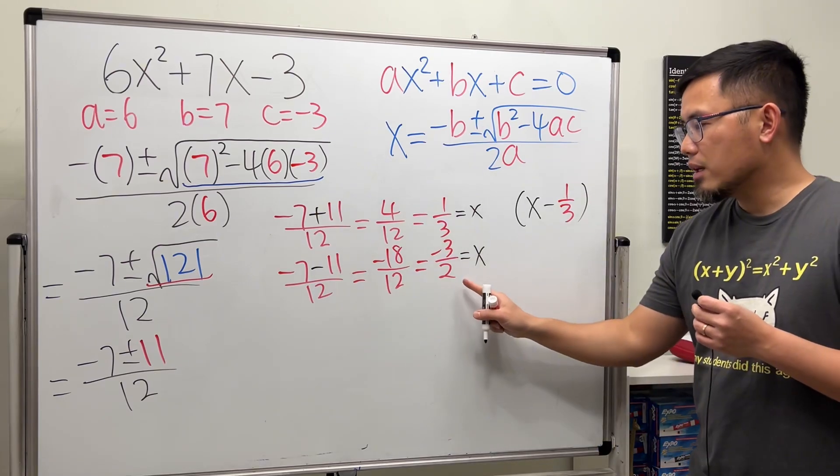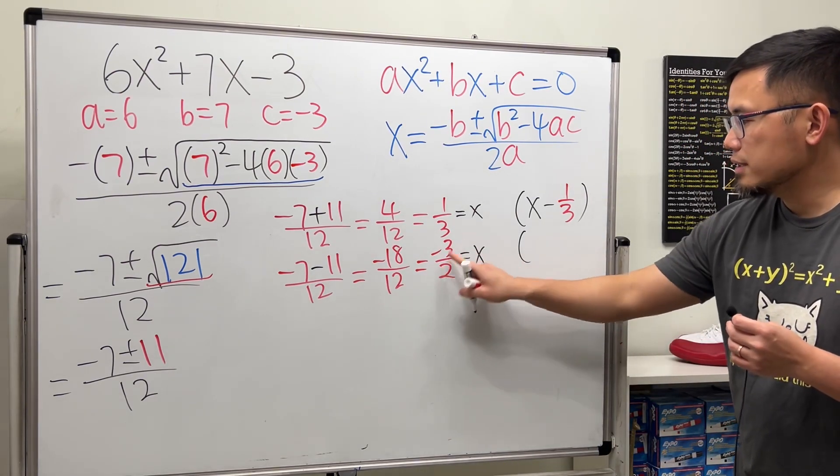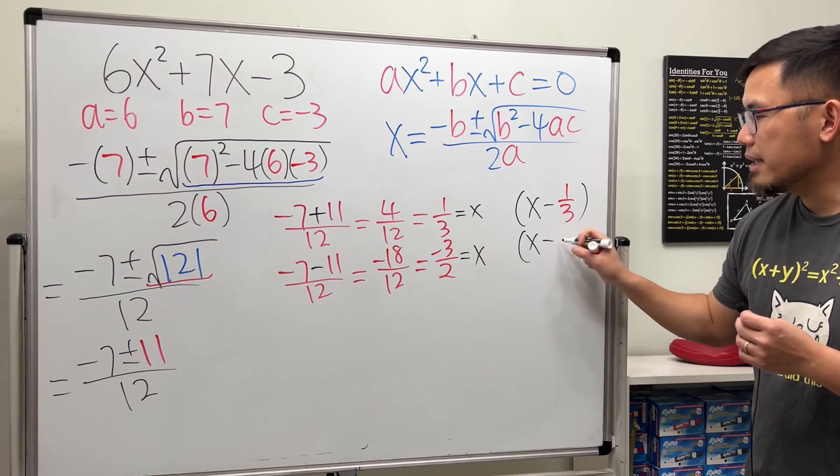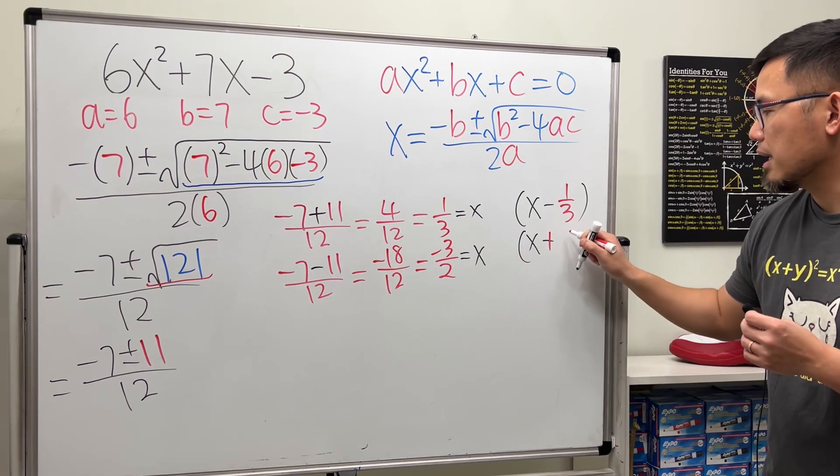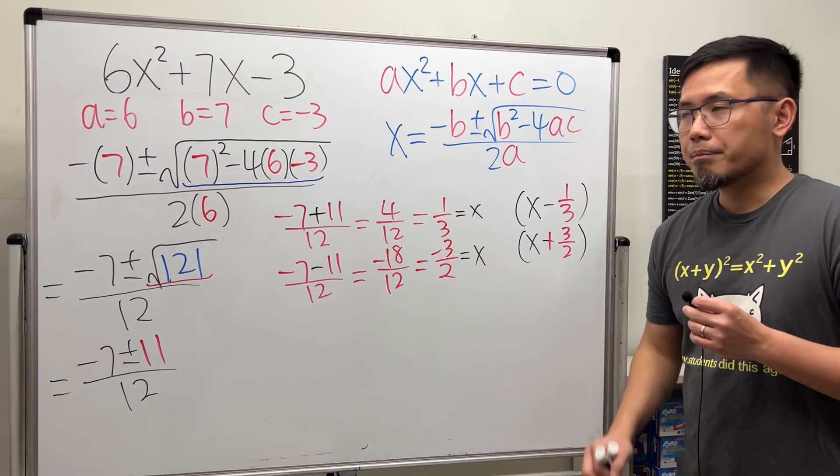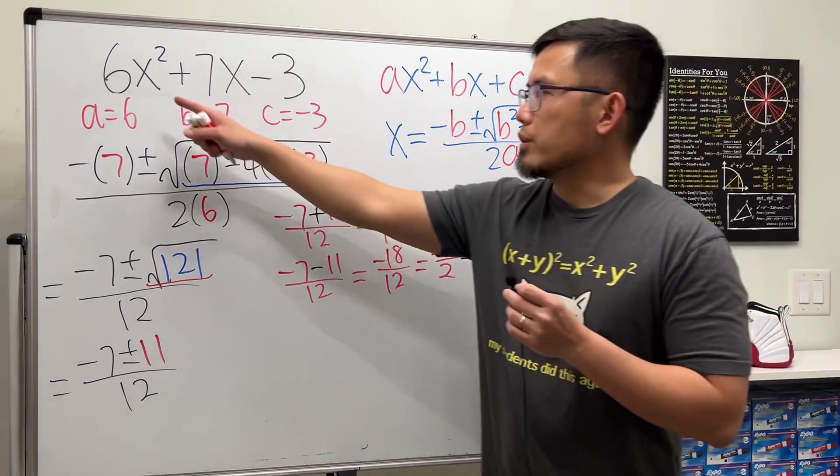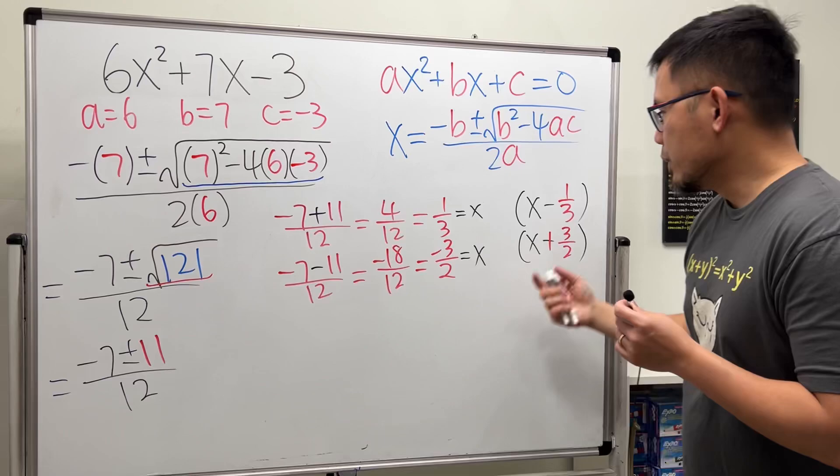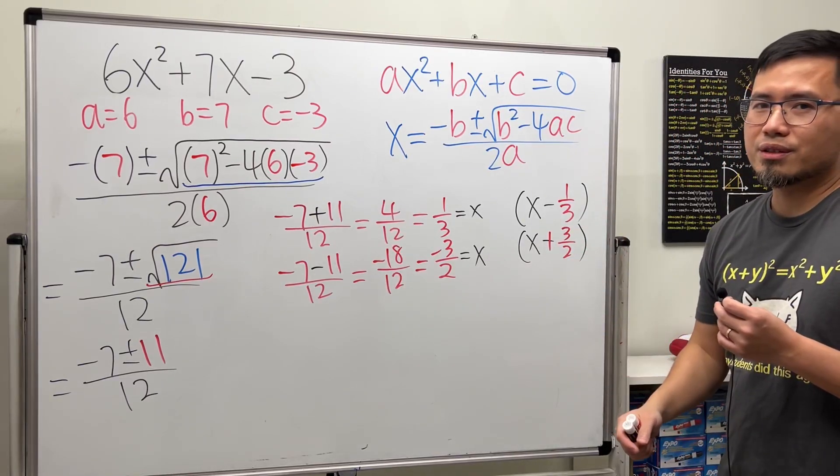And then right here, do the same thing. Move this to the other side. It's x minus a negative. So it becomes a plus 3 over 2. But here's the thing. Originally, there was no fraction. How can we end up with a factor that has fraction? So what do we do?